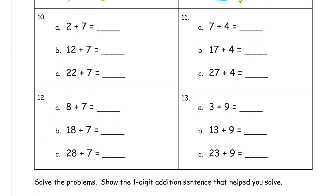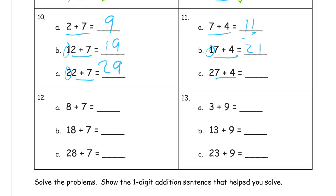It won't always follow that pattern, so we still need to pay attention to the numbers. We're looking at two plus seven — that's nine. You see this two plus seven here and here also, so that's nine plus one more ten: nineteen, then nine plus two more tens: twenty-nine. Now seven plus four is eleven, so it's a little bit trickier. Seven plus four plus one more ten is eleven plus ten: twenty-one. Seven plus four plus two more tens is thirty-one.